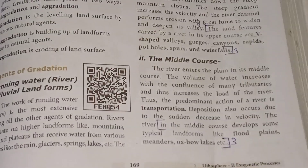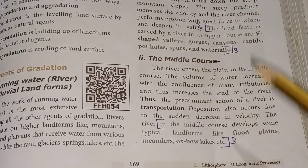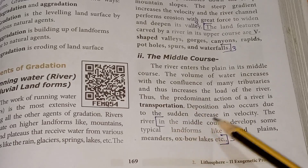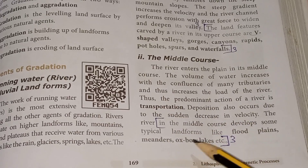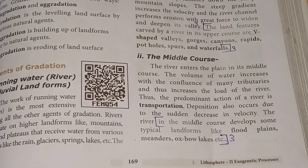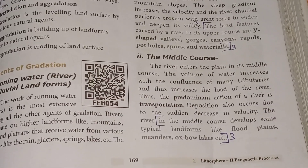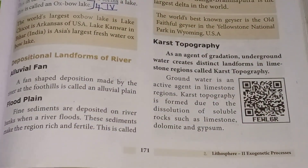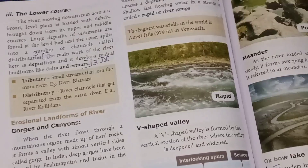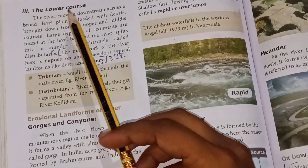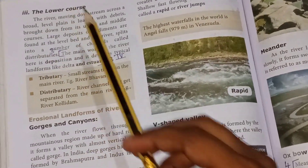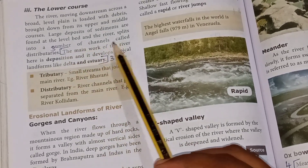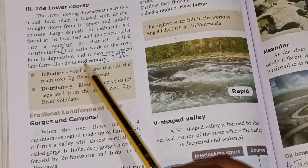For the middle course, write the heading and list the associated landforms in three to four lines. For the lower course, write the heading and list its landforms including delta in three lines.